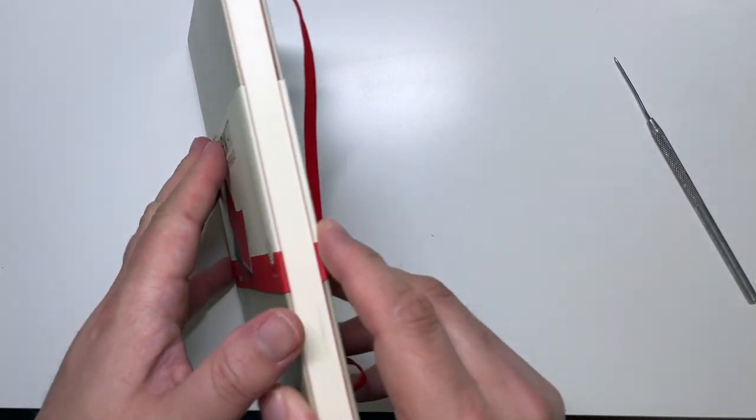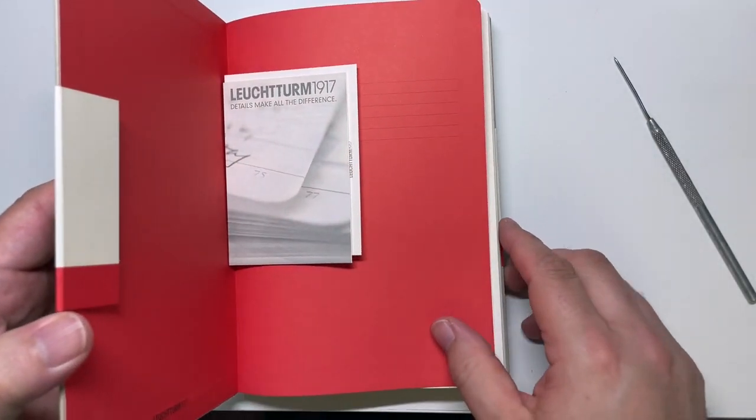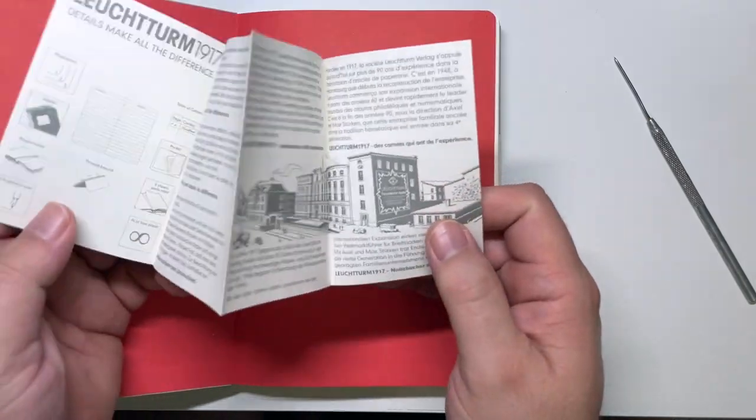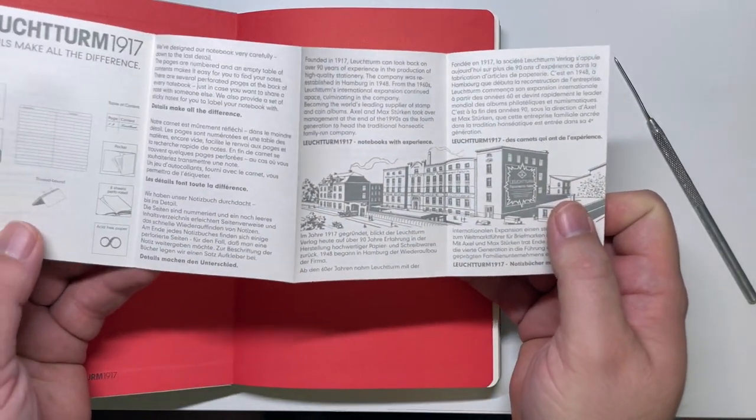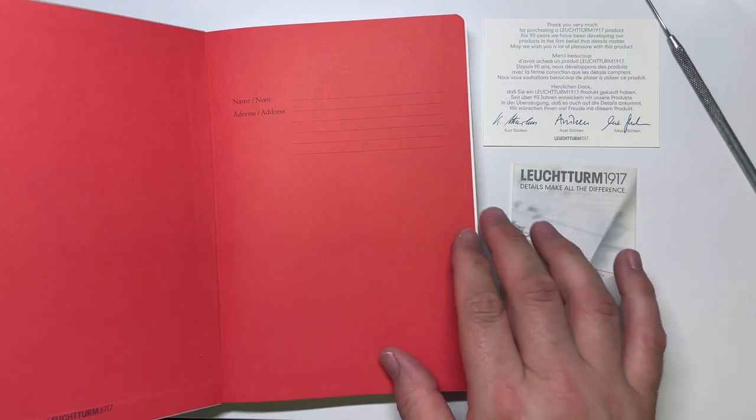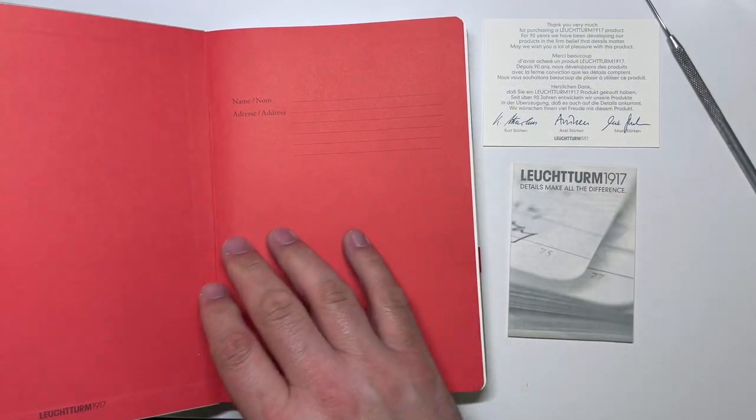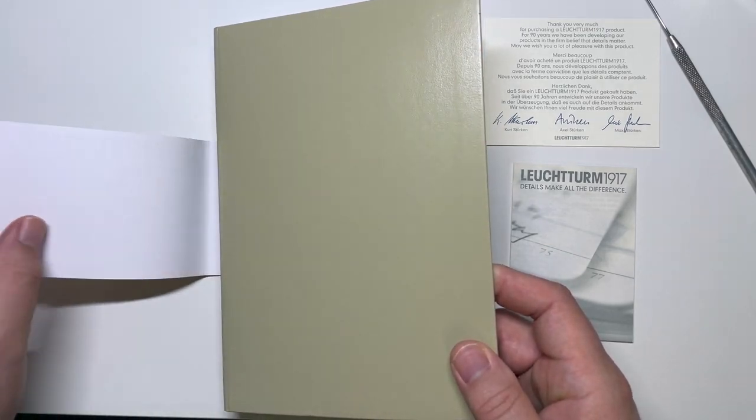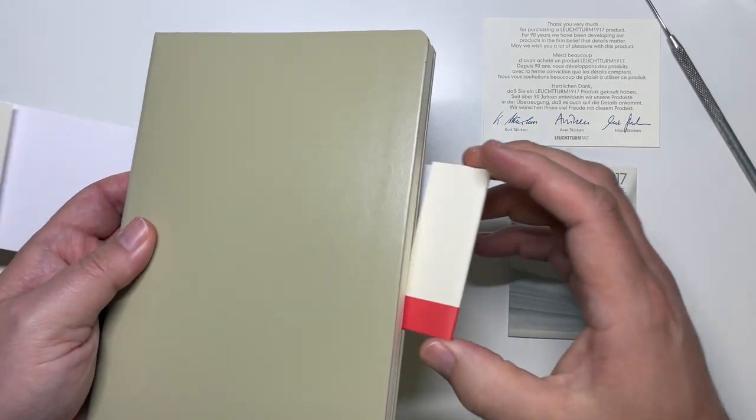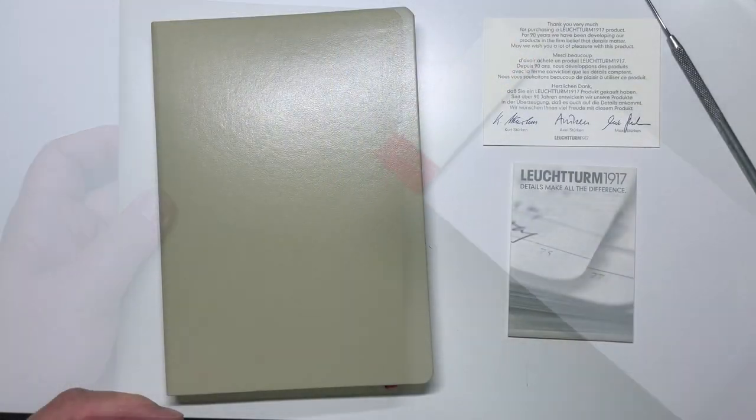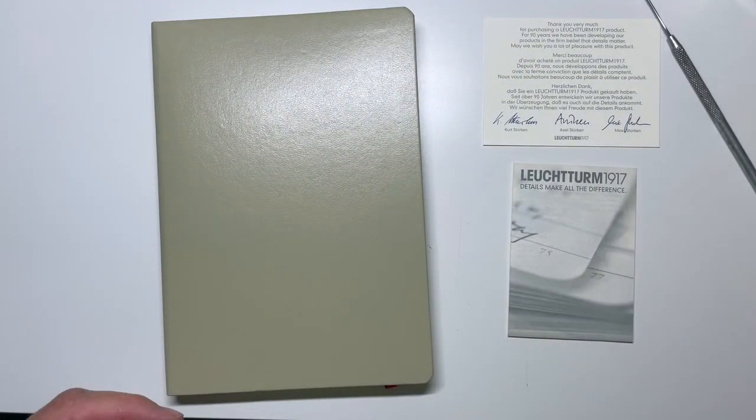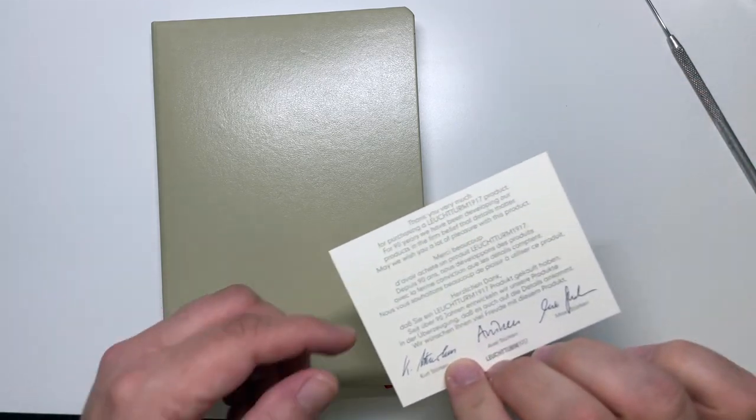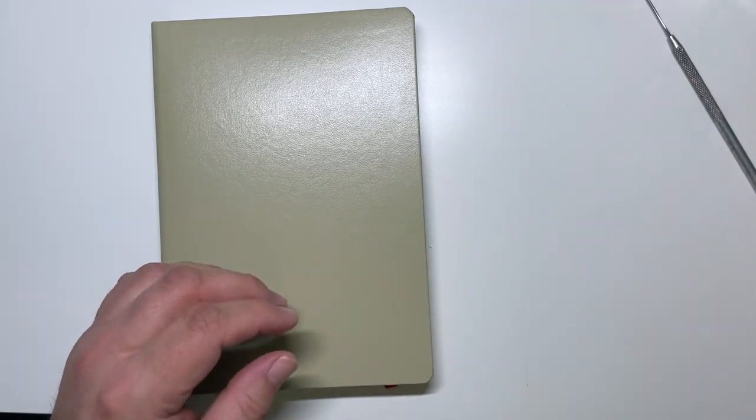But where to begin? Well, when you first open their book, you're going to find this little accordion pamphlet that they tuck inside along with a thank you card. I really like this little pamphlet because it gives a little history of the company. It shows what kind of books they offer and the different pages that you can get with these books. They have blank pages like this sketchbook, or you can get ruled pages, grid-like squared pages, or dotted pages for journaling. I use this mostly for sketching, but I have used them for keeping notes in the past.